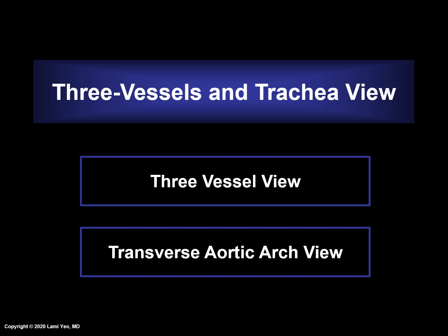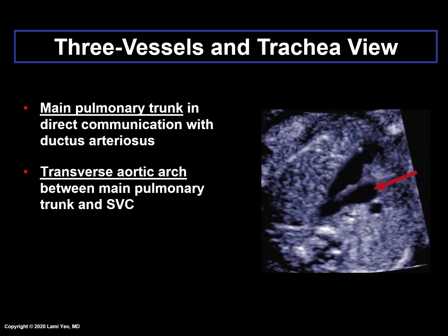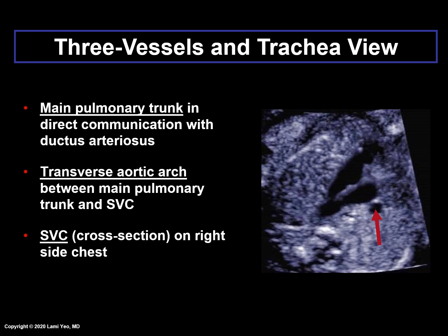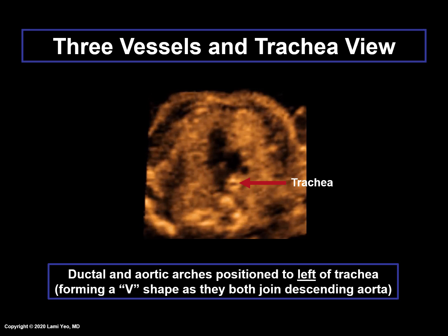Three vessels and trachea view, three vessel view, and transverse aortic arch view. In the three vessels and trachea view, the main pulmonary artery is in direct communication with the ductus arteriosus, has the largest diameter of the vessels, is the most anterior, and is leftwards. The transverse aortic arch, or dolphin, is located between the main pulmonary trunk and superior vena cava. The superior vena cava has the smallest diameter of the vessels, is the most posterior, and is rightwards. The trachea, which is seen as an echogenic ring surrounding a small fluid-filled space, is located posterior to the superior vena cava. Both ductal and aortic arches are positioned to the left of the trachea and form a V-shape as they both join the descending aorta.